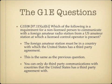Which of the following is a requirement for a non-licensed person to communicate with a foreign amateur radio station from a U.S. amateur station at which a licensed control operator is present? This is essentially third party communications. The answer is the foreign amateur station must be in a country with which the United States has a third party agreement. You can only do third party communications with countries that the United States has a third party agreement with.